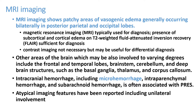Normally when we have a stroke-like feature, we take a CT scan to do the investigation faster. However, MRI can pick up PRES better than CT scan. MRI shows patchy areas of vasogenic edema, which mainly occur in the posterior parietal and occipital lobes. Therefore, MRI is the ideal investigation in PRES syndrome.